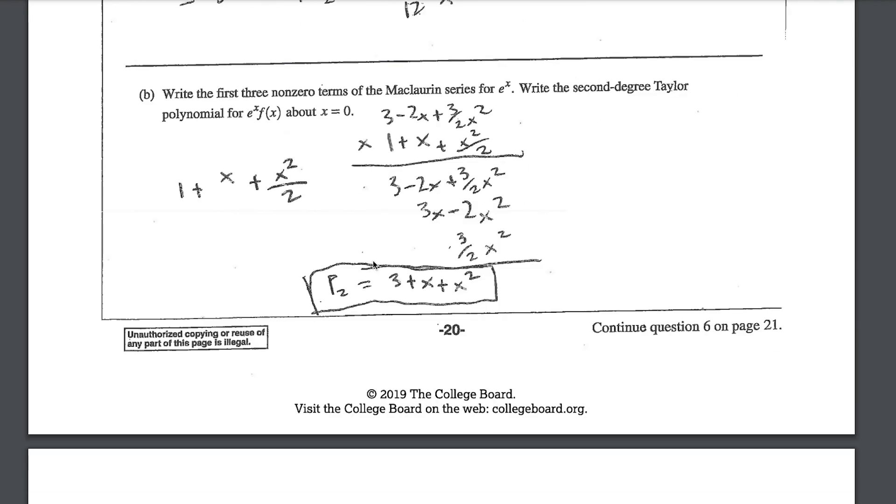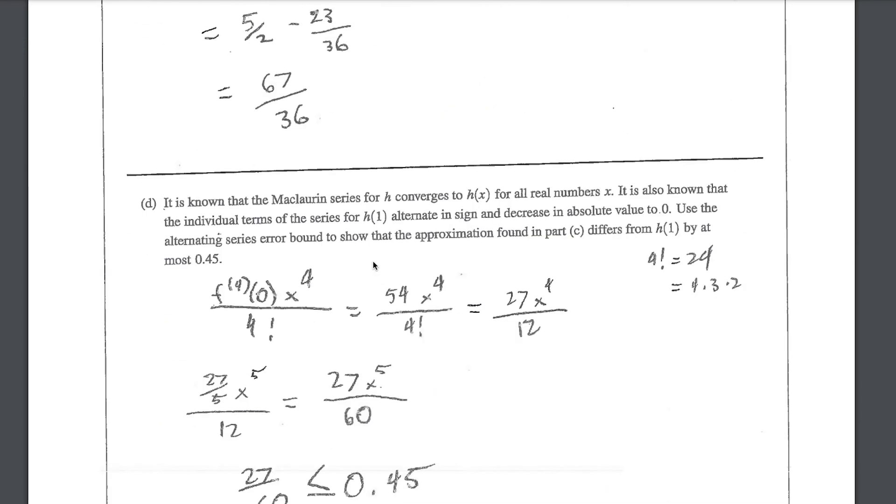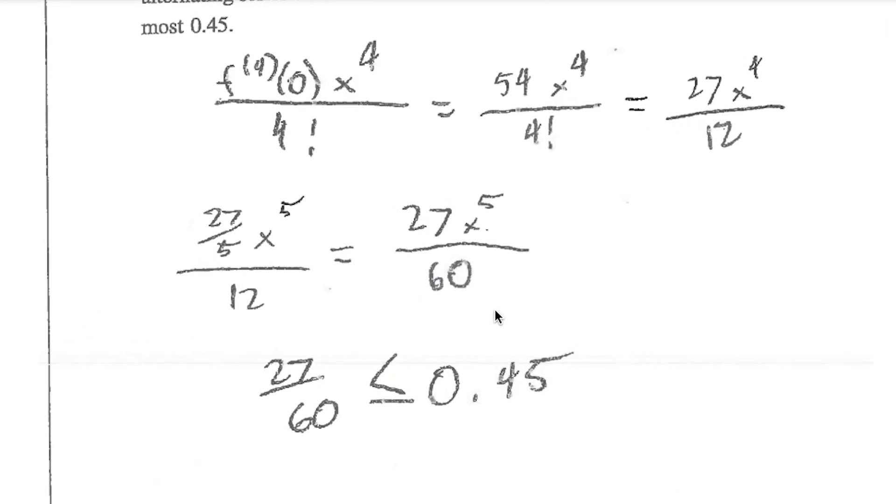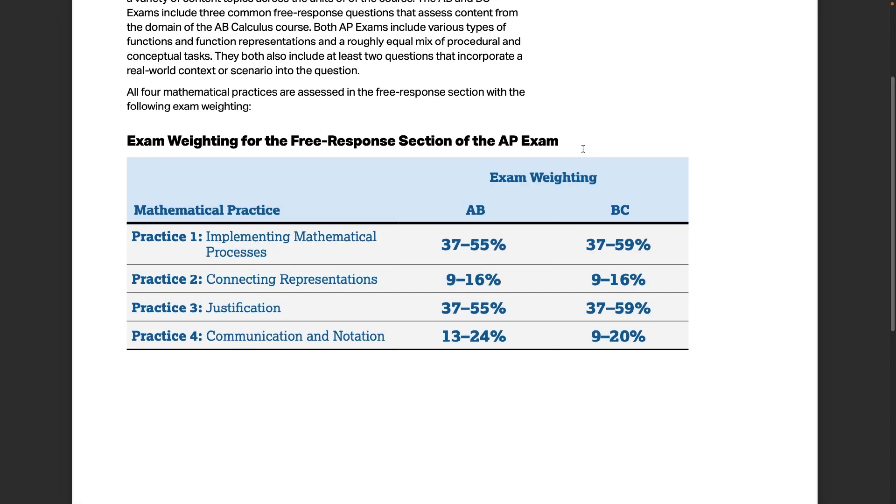For example, this student here, the student who got six out of nine points, I'm going to focus on the last part. And notice they were looking for the alternating series error bound, and something as simple as them not saying the absolute value of the error is less than or equal to 0.45 lost them credit for this part of the question. This is a very, very, very important detail of how you're going to be graded in the free response section of the AP exam.